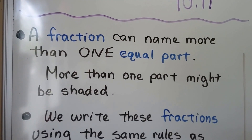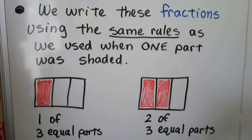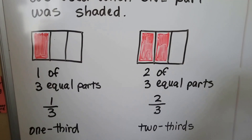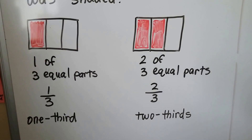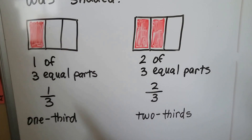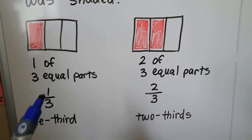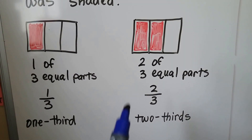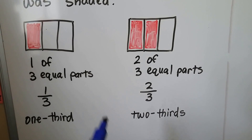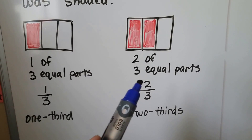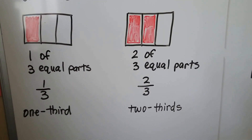More than one part might be shaded. We write these fractions using the same rules as we used when one part was shaded. As we learned in the last lesson, when we have a rectangle with three equal parts and one part is shaded, we have one third. When more than one is shaded, we still have three equal parts, but now two are shaded. So we write a two up here. Two parts are shaded out of the three equal parts — two thirds are shaded.